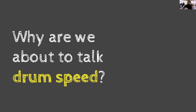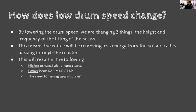If you turn drum speed down, it will have a profound impact on both the rate of roasting and the air temperatures experienced. By lowering drum speed, you change the height and frequency of bean lifting, which means the coffee removes less energy from the air as it passes through the roaster. This results in a higher exhaust temperature, a lower bean rate-of-rise maximum and turning point, and requires more burner input to produce a similar roast profile.